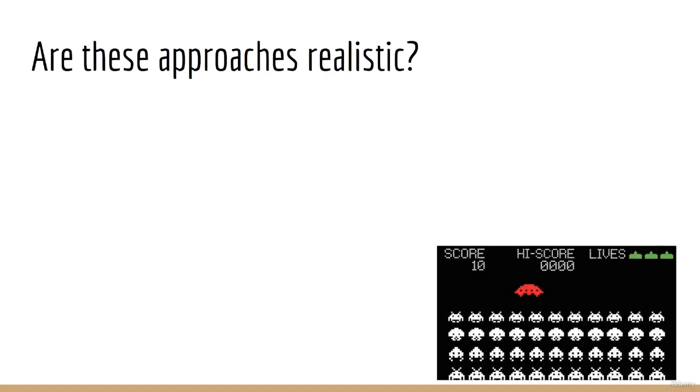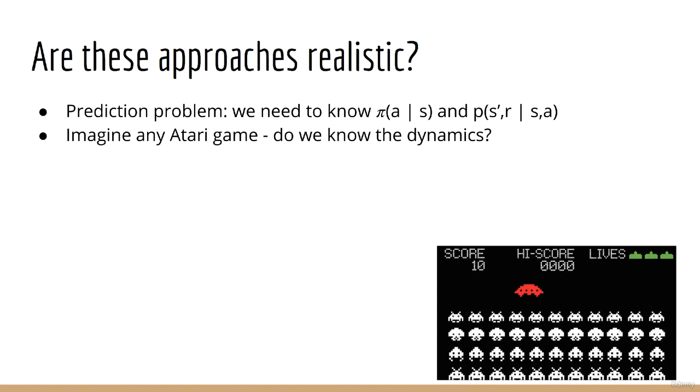Let's consider now why both of these approaches are somewhat unrealistic. First, let's consider the prediction problem. Previously, the solution required us to know both the policy distribution and the environment dynamics. But the reality is, if you imagine, say, any Atari game, we won't know the environment dynamics.